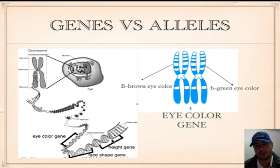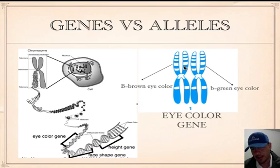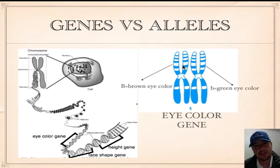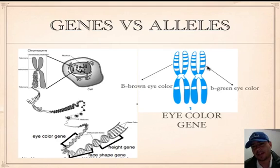Here you have a homologous pair of chromosomes. The mom chromosome and the dad chromosome both carry eye color instructions. But which eye color did they give you? Mom is giving brown eyes — that's the allele, the different form of eye color. Alleles are always designated with a letter. The allele mom gave is big B, which is brown eyes, and the allele dad gave is little b, which is green eyes. That's genes and alleles.